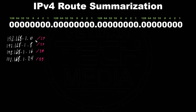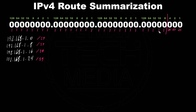In this case, the slash 29 notation means 29 bits turned on. The first octet is 8 bits, second octet is 8 bits — total 16, third octet is 8 bits — total 24, then 25, 26, 27, 28, 29. The last bit turned on has a decimal value of 8, so our network increment on the last octet starts at 0, then 8, 16, 24.